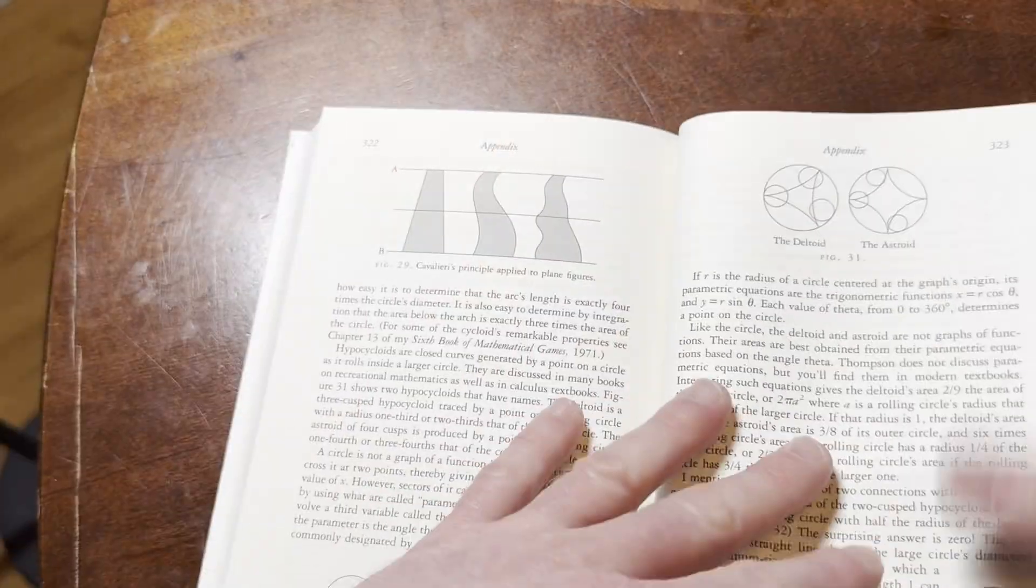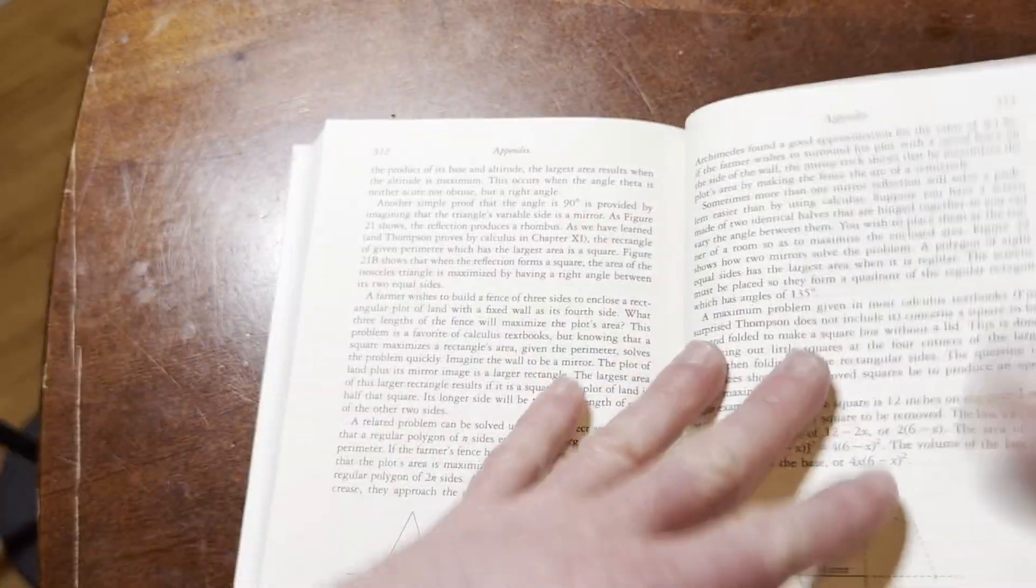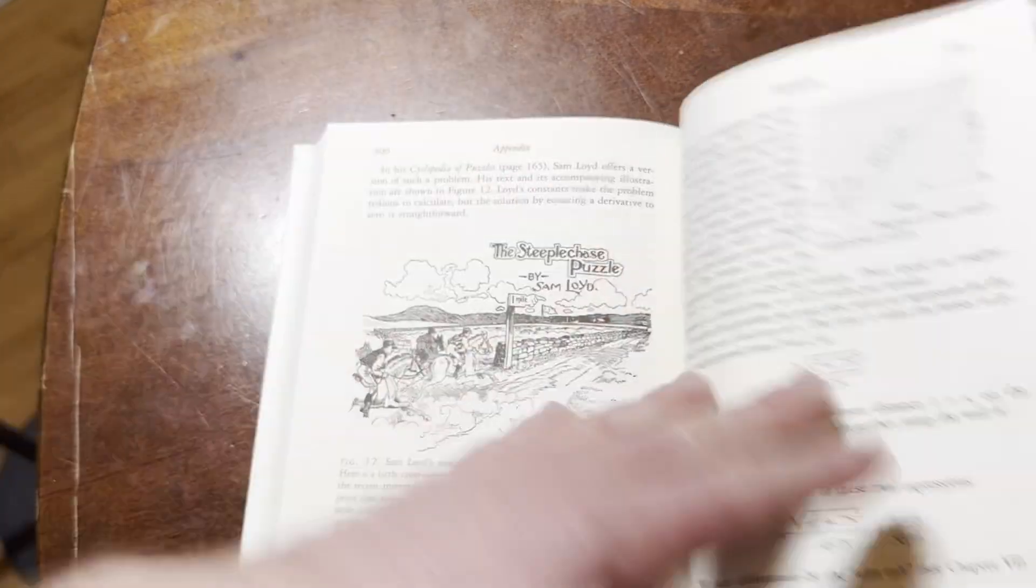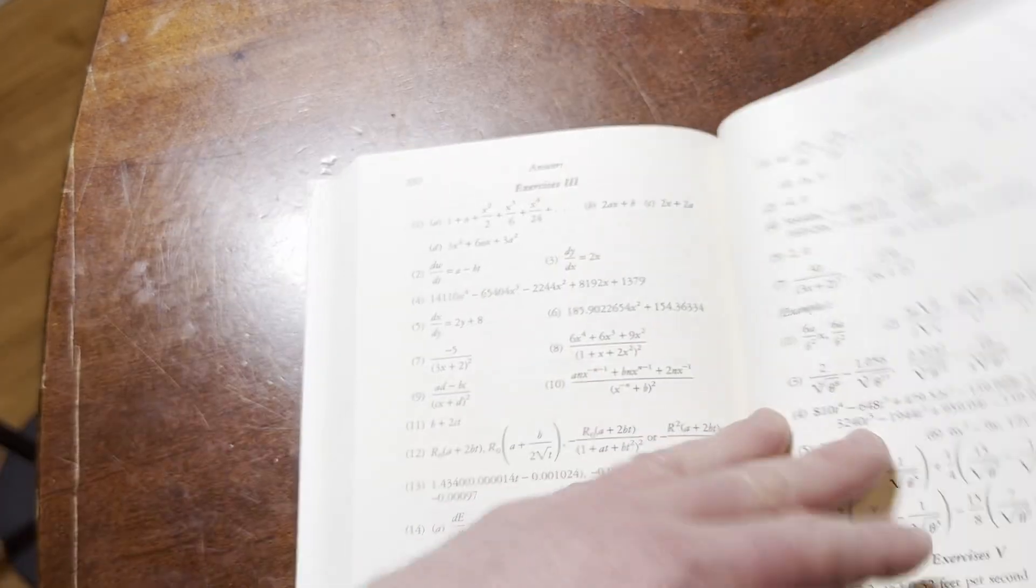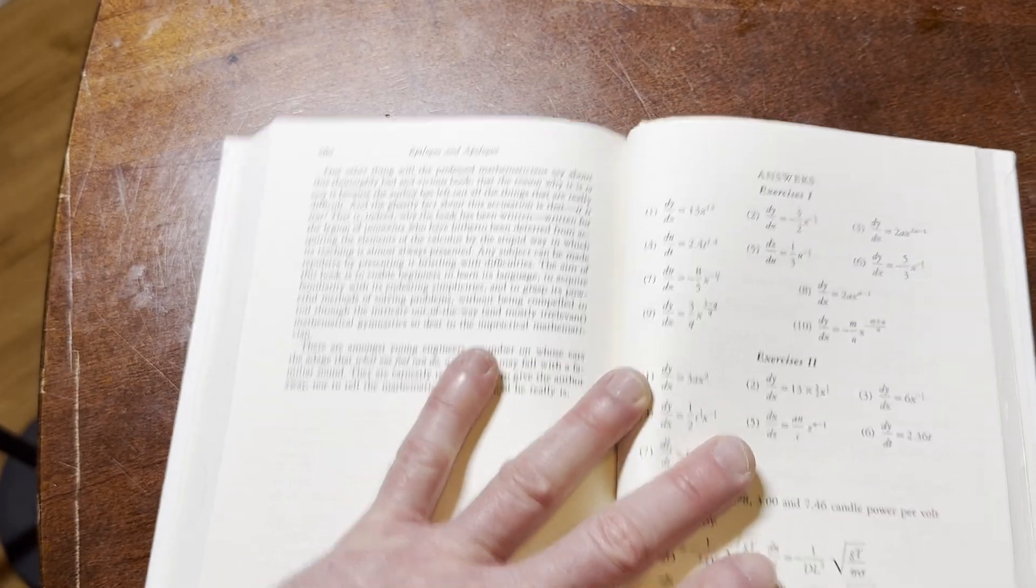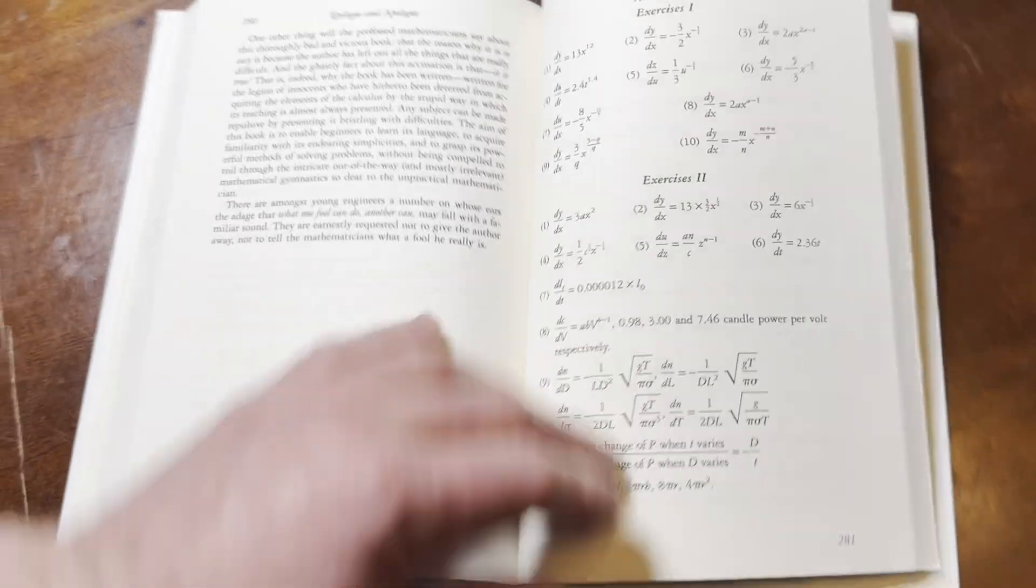Let's look at the back of the book here. So we've got an index and some appendices. More appendices. And then you have answers here in the back for exercises, right? So we've got some of the answers back here, which is kind of nice.